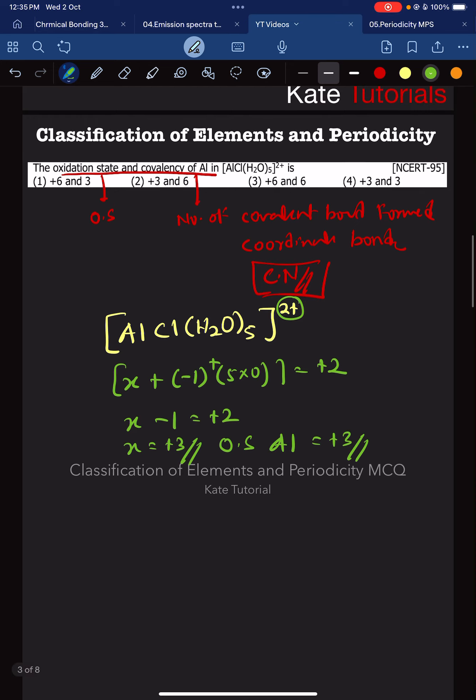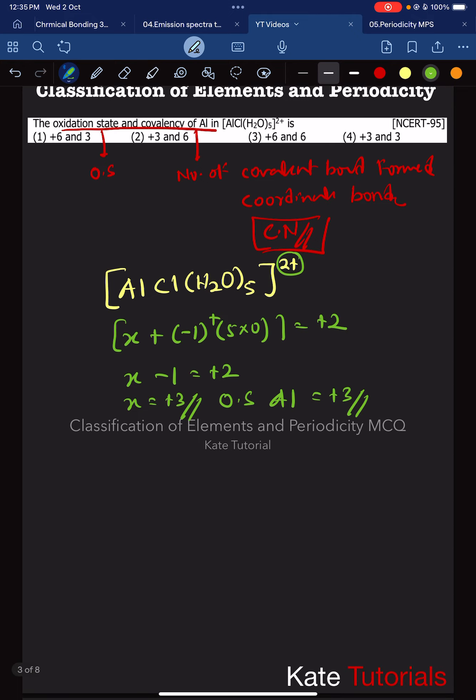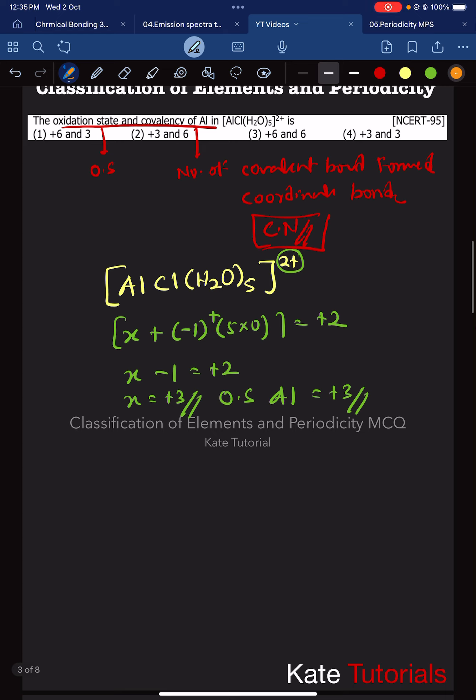Now for the covalency, which is the coordination number. For this aluminum, it has one chlorine and five water molecules: H2O, H2O, H2O, H2O, and H2O. Total coordinate bonds: 1, 2, 3, 4, 5, 6.